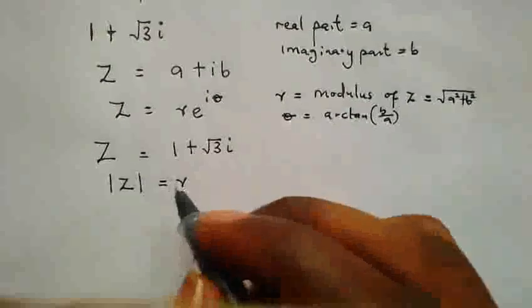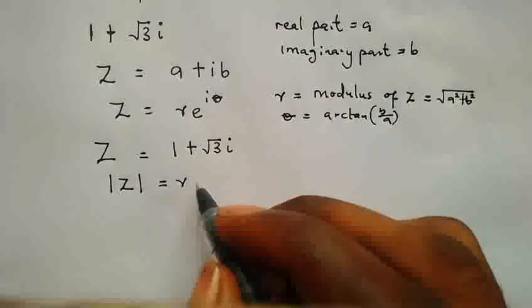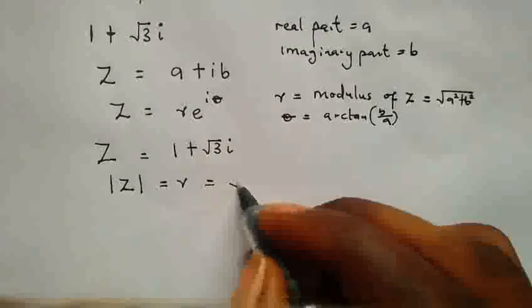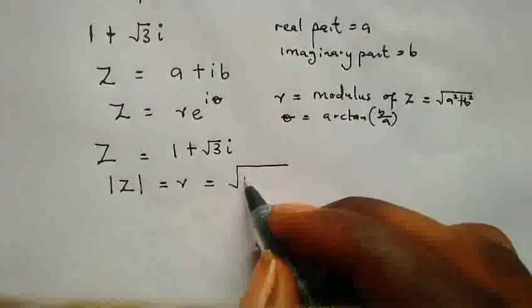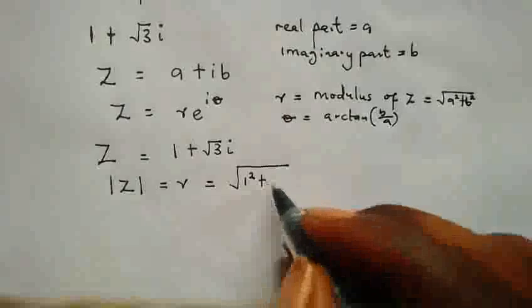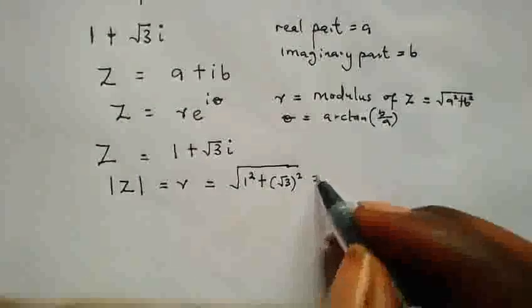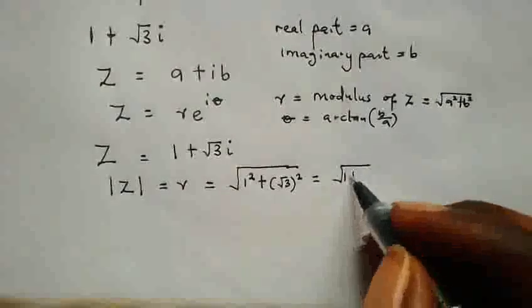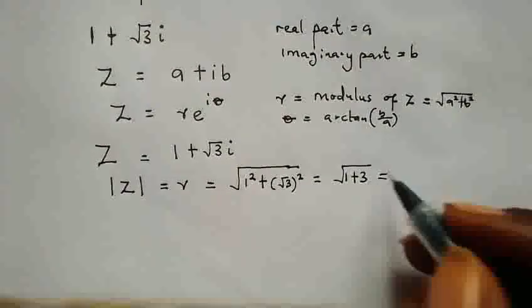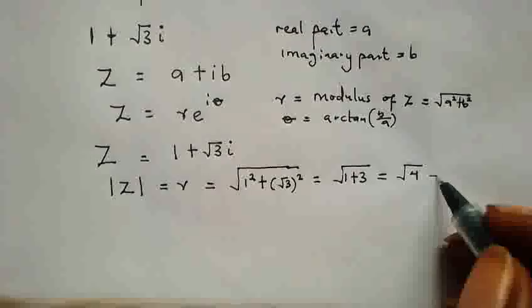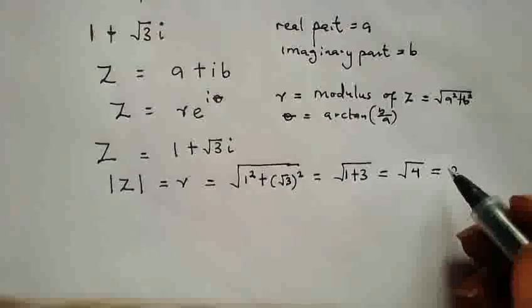So here we have our modulus of Z equals R and this is equal to the square root of A squared, that is 1 squared, plus here the root of 3 squared. This is equal to square root of 1 plus 3, which is equal to square root of 4 and we will have this as 2.